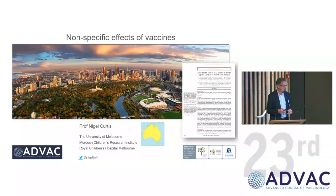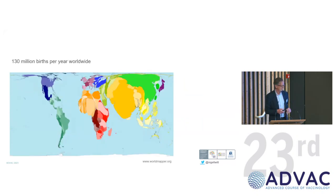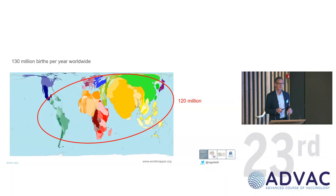I come from Australia in the bottom right-hand part of the world. And this map is distorted by the 130 million births that occur each year worldwide. So you can see Australia becomes a shrimp, very small, and you can see where all those births are. And the vast majority, 120 million of those, occur in areas of the world where there is still endemic TB. And all of those babies born in those areas get BCG at birth.